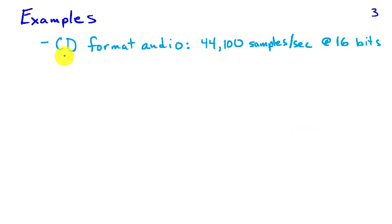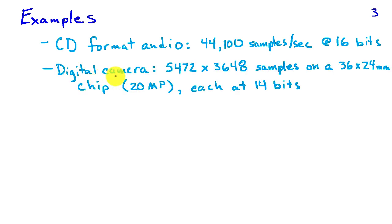So let's take some examples. CD format audio is sampled at 44,100 samples per second. So t sub s would be one over 44,100, and each of those samples is a 16-bit number. So the sound pressure is measured by the microphone, converted to a voltage, and that voltage is converted to a 16-bit number. However, a typical digital camera might have 5,472 by 3,648 samples taken on a 36 by 24-millimeter image plane or chip, that would be a 20-megapixel camera, and each of those samples would be recorded at 14 bits.